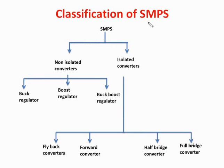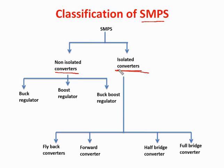Now the classification of SMPS — that is, the switching regulator — is divided into two categories: non-isolated and isolated. In non-isolated converters, the output voltage is electrically connected to the input voltage. In isolated converters, a transformer is used to separate the primary and secondary, so the output is isolated from the input by the transformer.